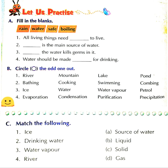Now B is circle the odd one out. From this you have to circle the word which is different from the given words. First is: river, mountain, lake, pond. River, lake, and pond can collect water in them — they are sources of water. While mountain is a landform, so it is the odd one out.